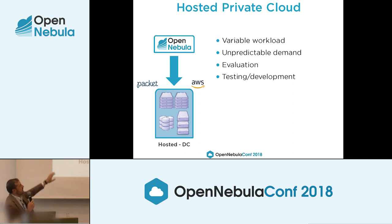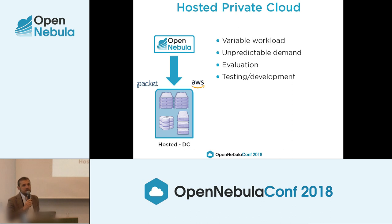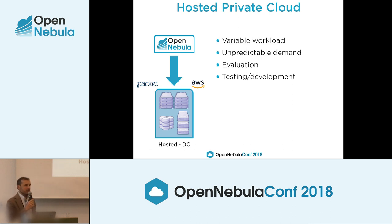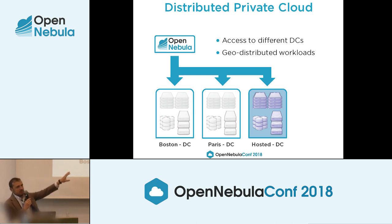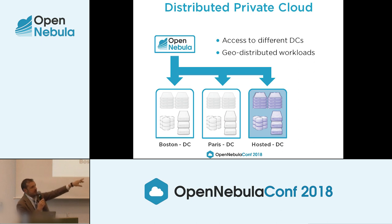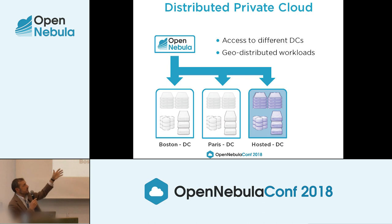You build a hosted private cloud because you have a variable or unpredictable workload, or you need a cloud for a short period of time — perhaps for evaluation, testing, or development. The third architecture is the distributed private cloud, which combines both the on-premise and hosted models. This supports different types of workloads — steady and variable — combining your own on-premise resources with those provided by a service provider, across different data centers or geo-distributed workloads.